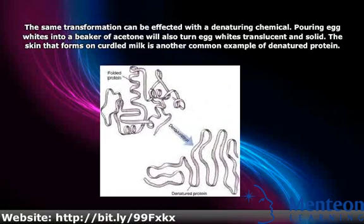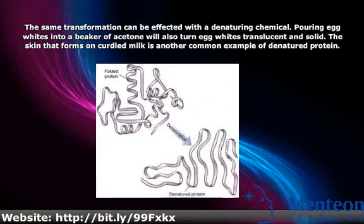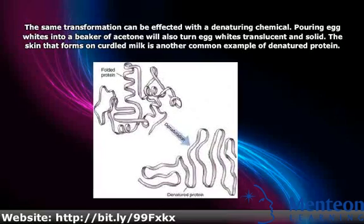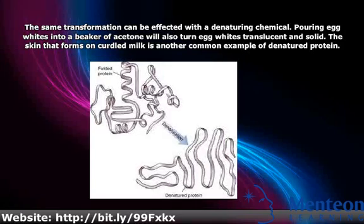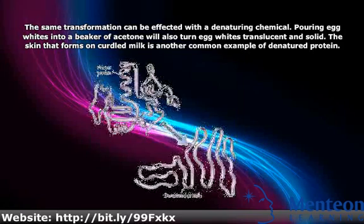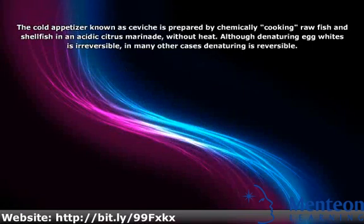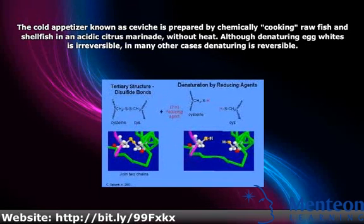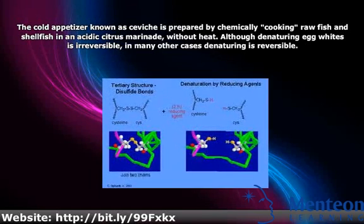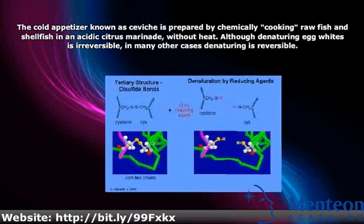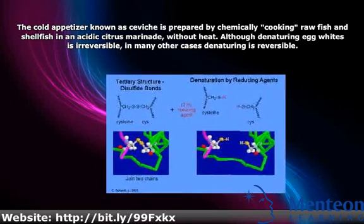The skin that forms on curdled milk is another common example of denatured protein. The cold appetizer known as ceviche is prepared by chemically cooking raw fish and shellfish in an acidic citrus marinade, without heat. Although denaturing egg whites is irreversible, in many other cases denaturing is reversible.